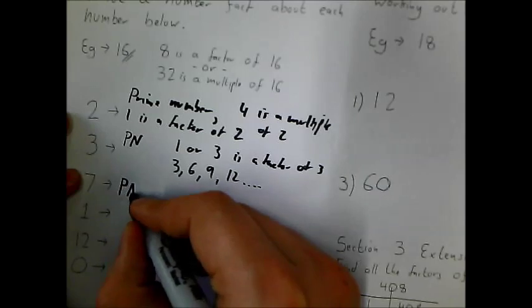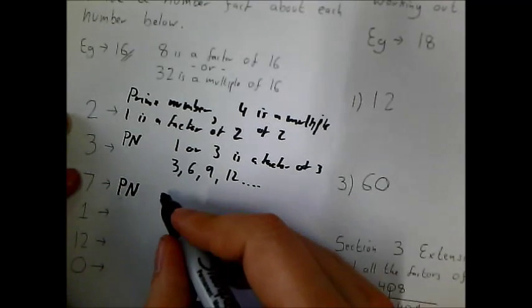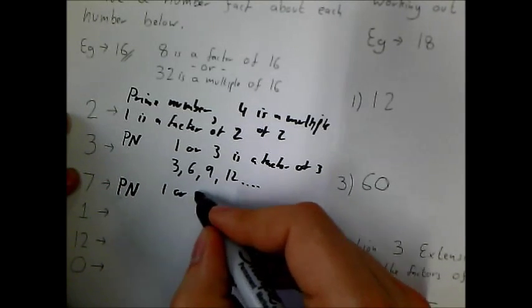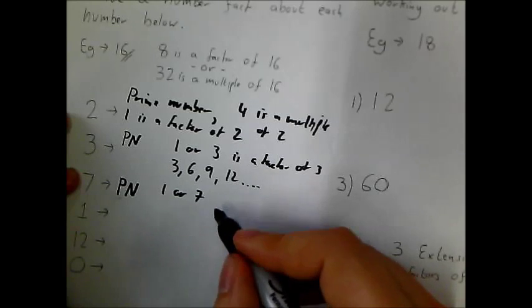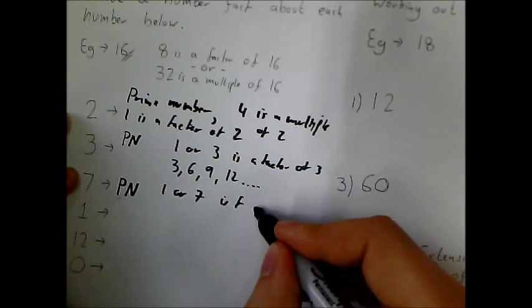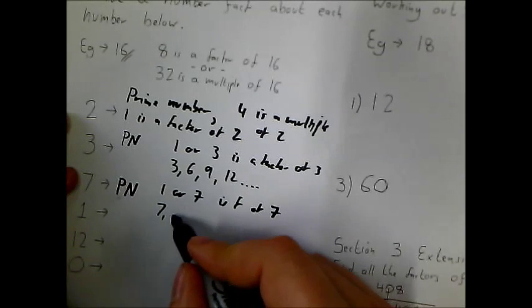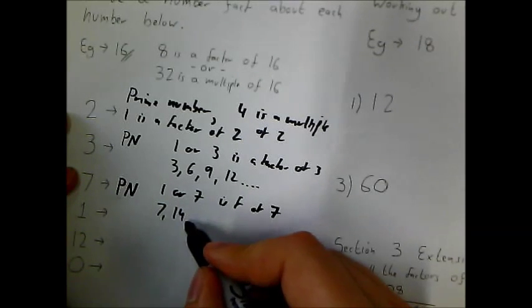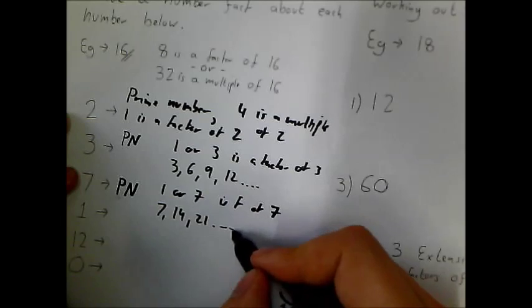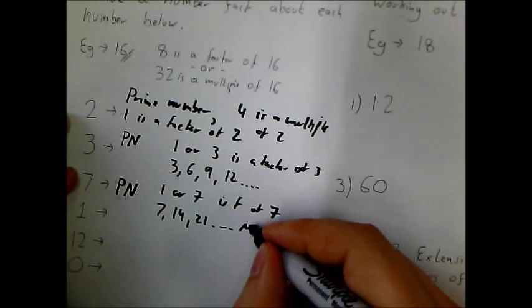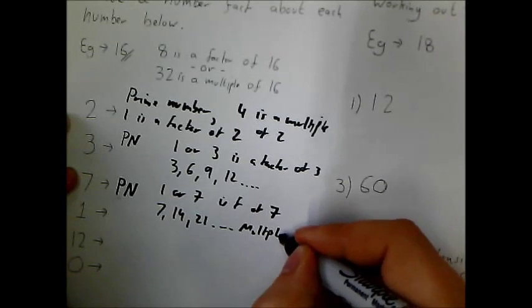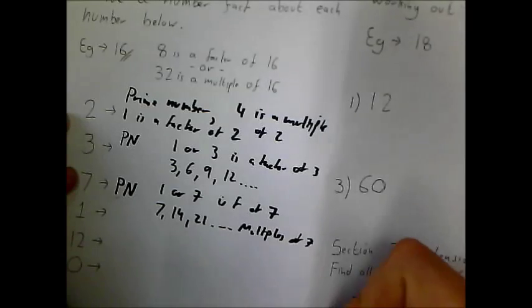Number 7, you could have said it was a prime number. And then you could have said 1 or 7 is a factor of 7. And for its multiples, you could have said 7, 14, 21, etc. Those are all multiples of 7.